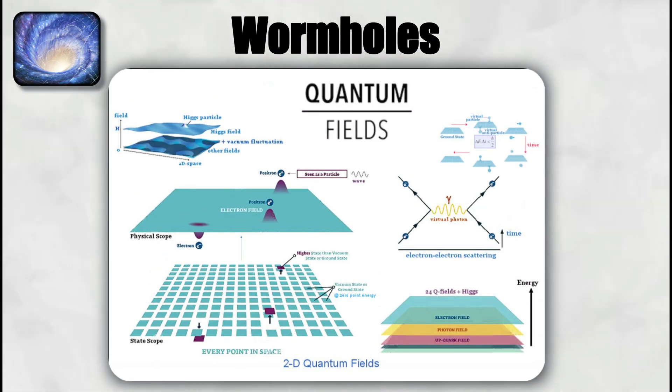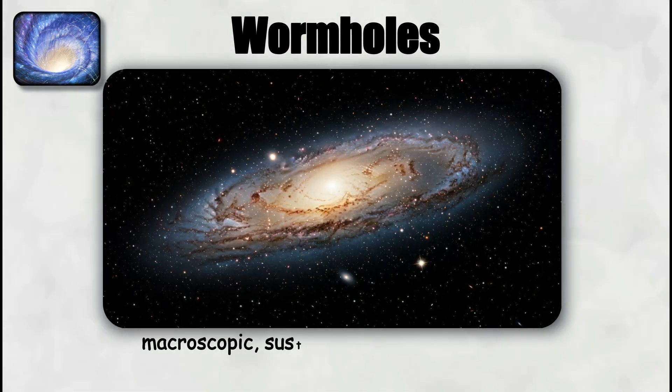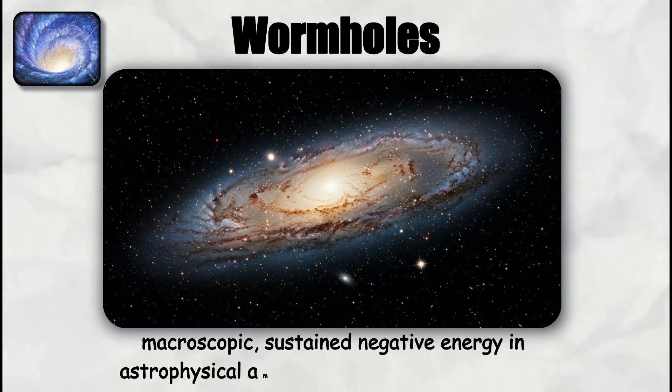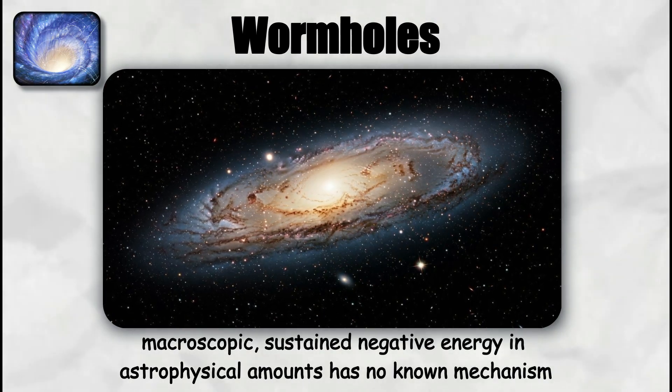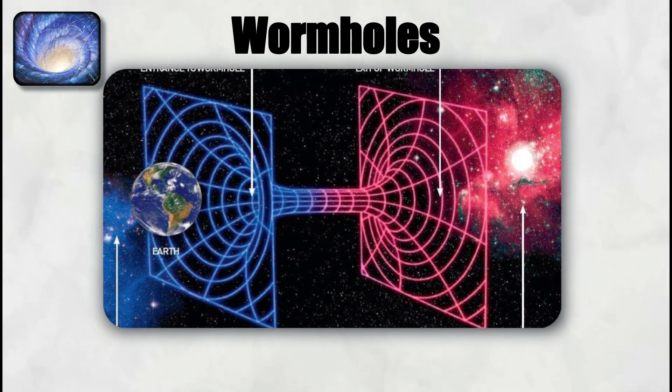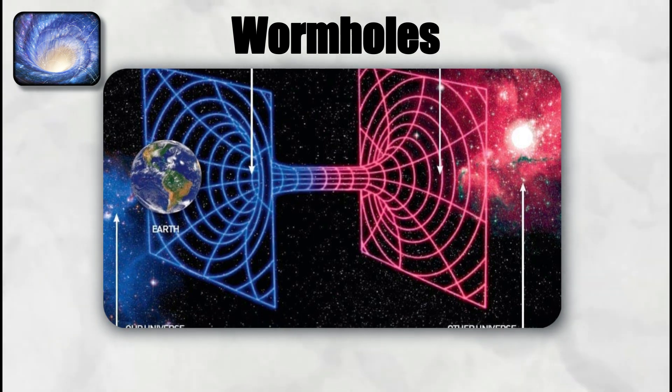In quantum field theory, tiny amounts of negative energy can exist in effects like the Casimir effect between closely spaced plates. But producing macroscopic, sustained negative energy in astrophysical amounts has no known mechanism. Several models have explored how wormholes could, in theory, be stabilized.